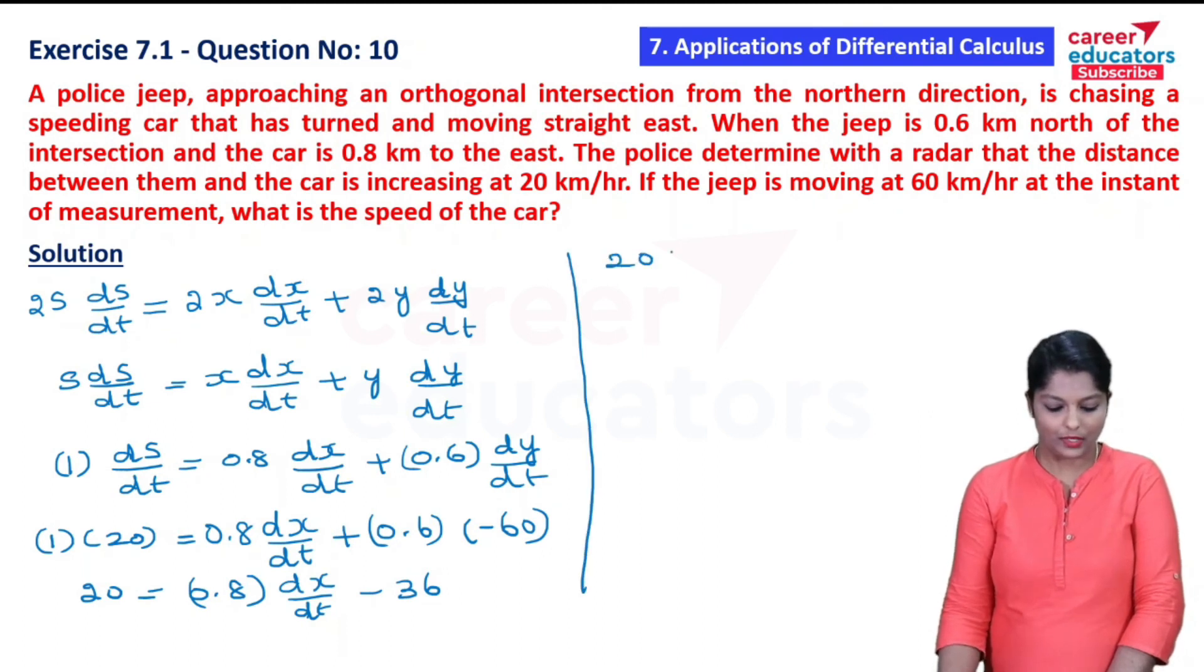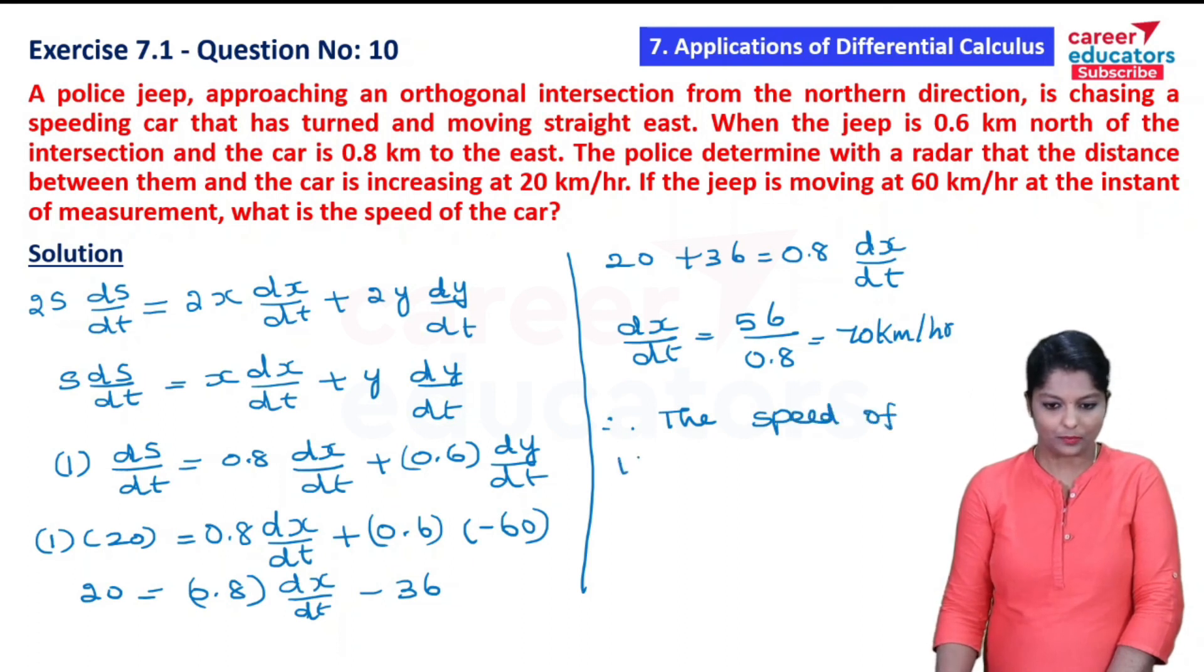20 plus 36 equal to 0.8 dx by dt. So dx by dt equal to 56 divided by 0.8, which equals 70 km per hour. Therefore, the speed of the car is 70 km per hour. That's all, we have completed this problem.